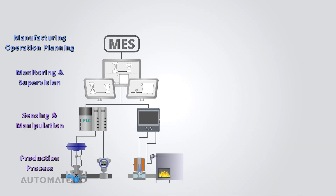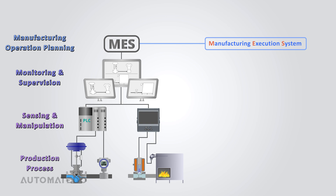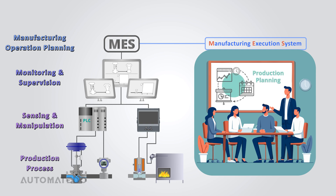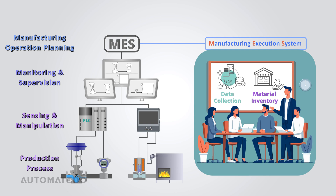Moving higher on the automation pyramid, the next level represents manufacturing operation planning, where the Manufacturing Execution System, commonly known as MES, plays a pivotal role. The MES enables comprehensive oversight of the entire manufacturing cycle — from initial handling of raw materials to final stages of production — while ensuring effective control, real-time tracking, and accurate documentation. The MES transforms gathered data into actionable insights, streamlining the creation of detailed production schedules, monitoring quality assurance, gathering critical operational data, and managing material inventories.